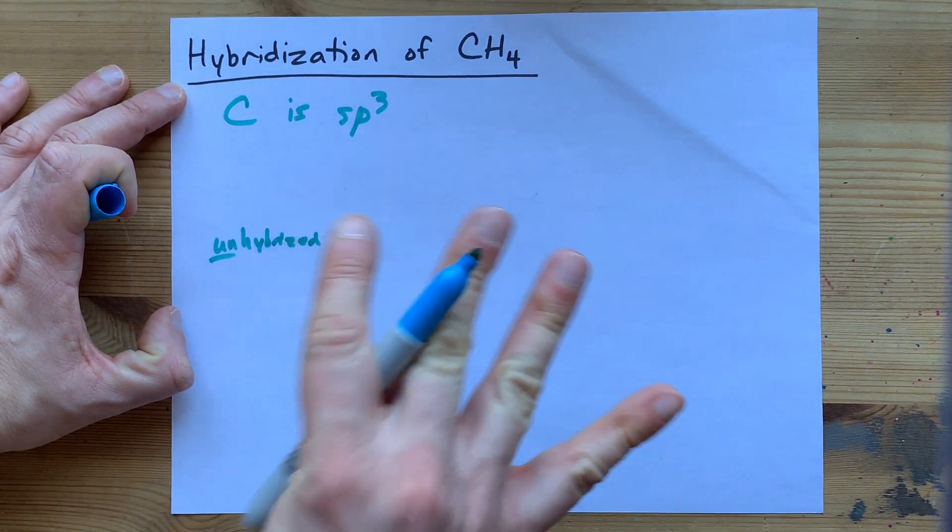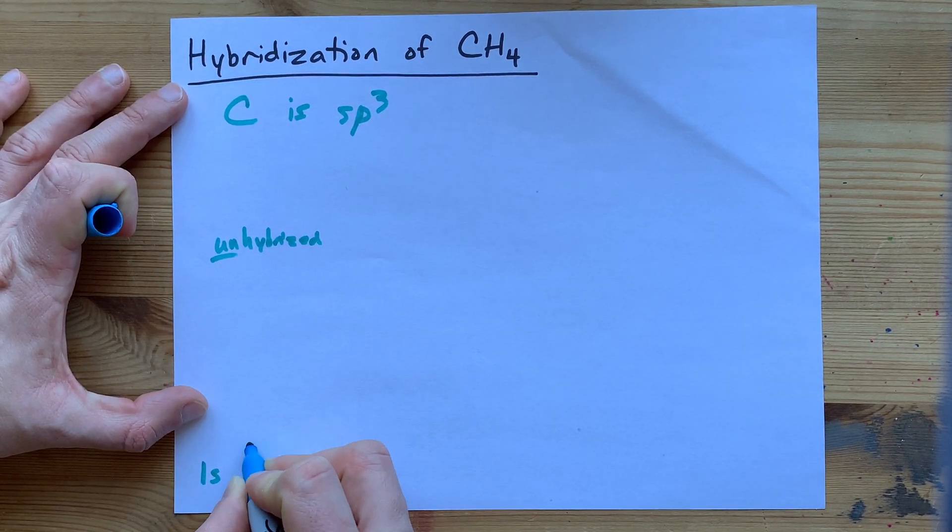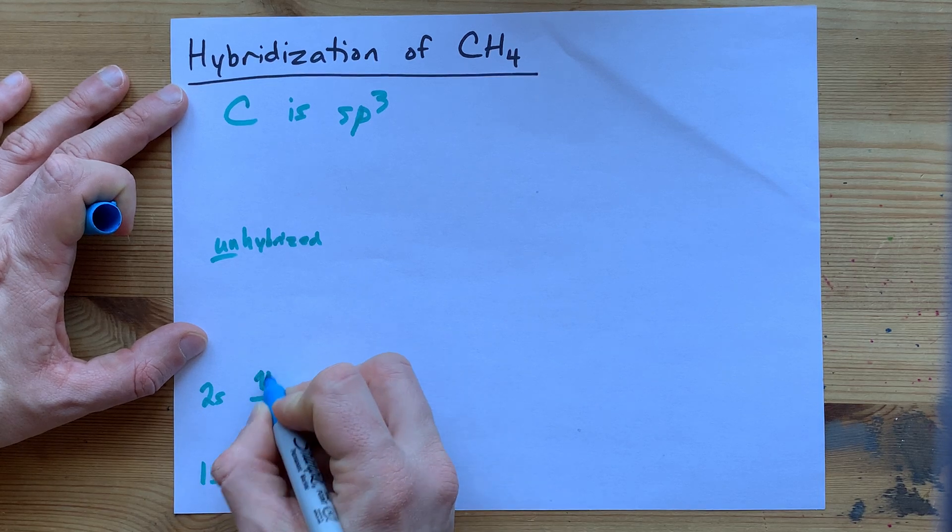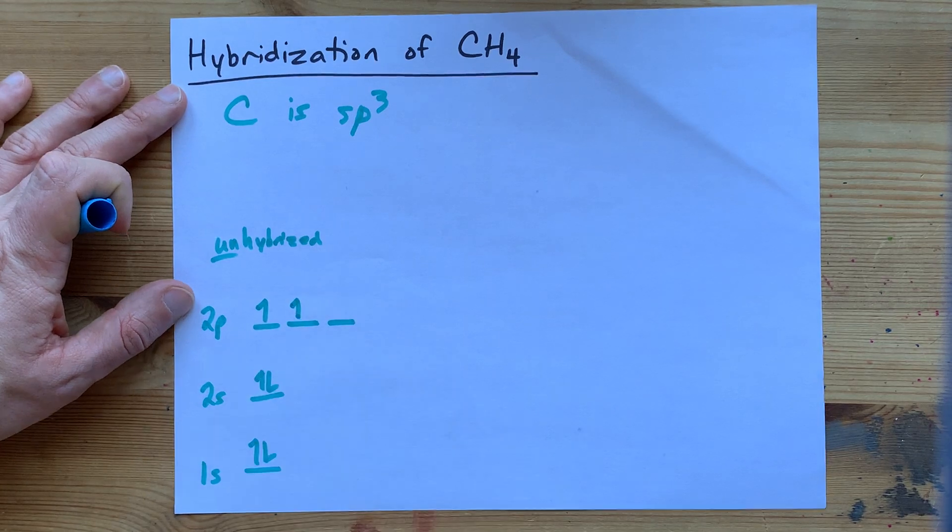Six electrons total, four electrons in its valence shell. Now, if you were going to draw the electron configuration diagram for that, you'd draw 1s2, 2s2, 2p2, which means you have an electron there and there.